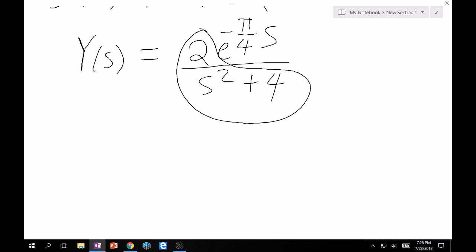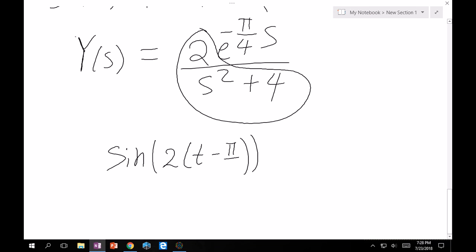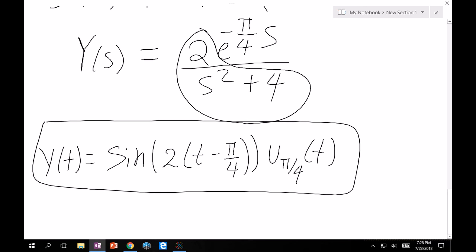Clearly, when you take the inverse Laplace of this, that looks a lot like sine of 2t. And it is. Except now we have an attached e to the minus pi over 4 times s, which I said in the last video as well. That just means that you shift your t by pi over 4, and then you attach a unit step at pi over 4. So what this becomes now is sine of 2(t - pi/4) times u pi over 4 of t. And that would be the solution to that IVP. And that's it.